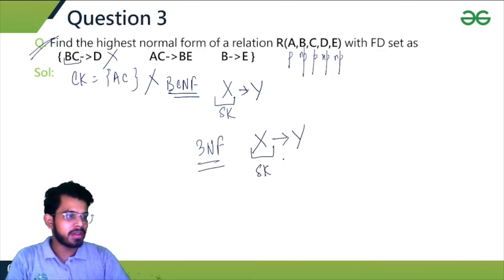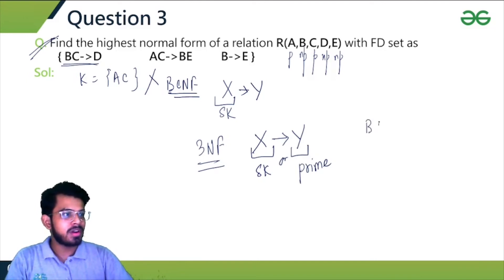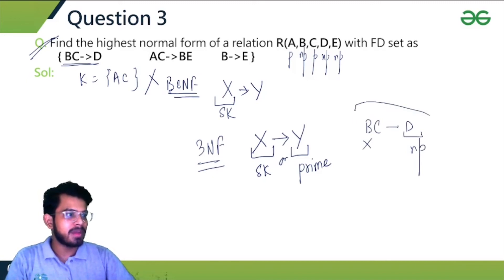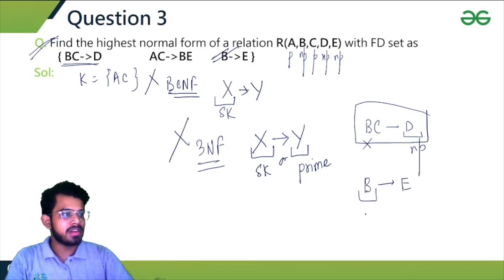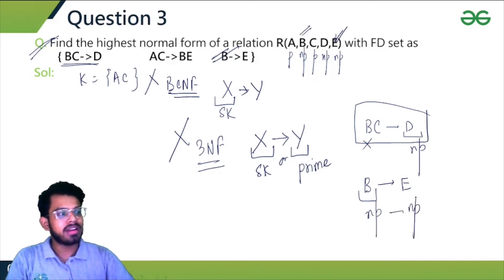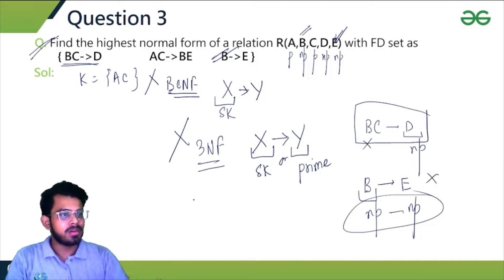What about 3NF? For every non-trivial functional dependency X to Y, either X is a super key or Y is prime. Looking at the FD where D is on the LHS: DC is not a super key, and D is a non-prime attribute. Also, B is a non-prime attribute and E is a non-prime attribute. If such functional dependencies exist between non-prime attributes where the LHS is not a super key, the relation is not in 3NF.